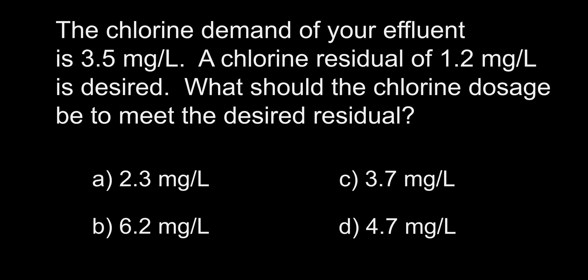The chlorine demand of your effluent is 3.5 milligrams per liter. A chlorine residual of 1.2 milligrams per liter is desired. What should the chlorine dosage be to meet the desired residual? A. 2.3. B. 6.2. C. 3.7. D. 4.7 milligrams per liter.